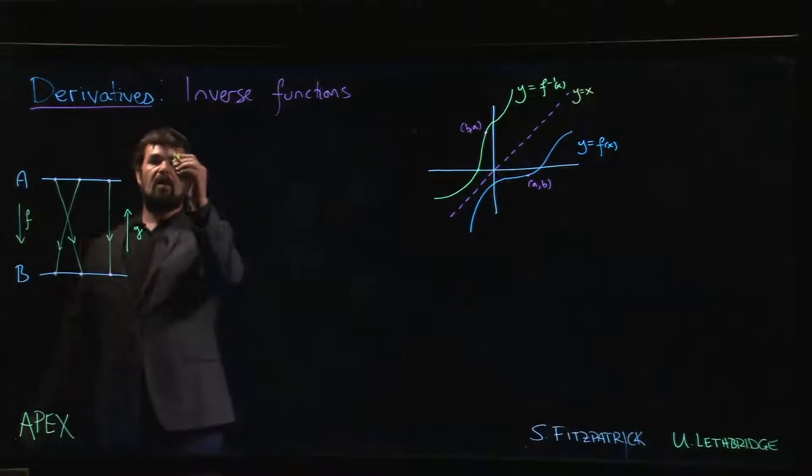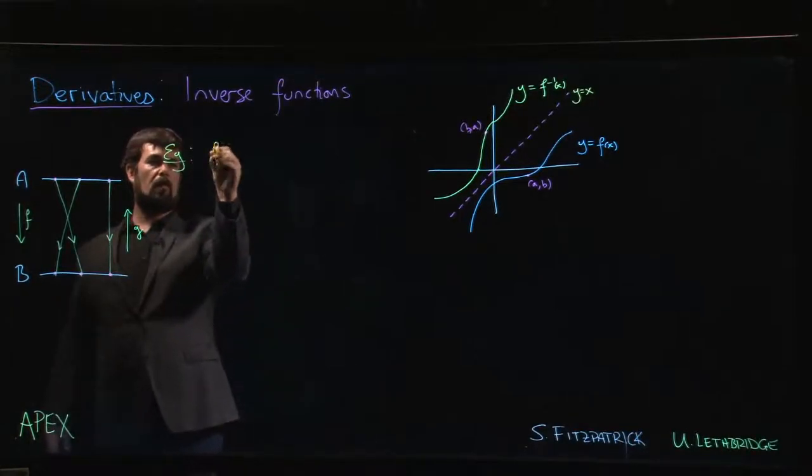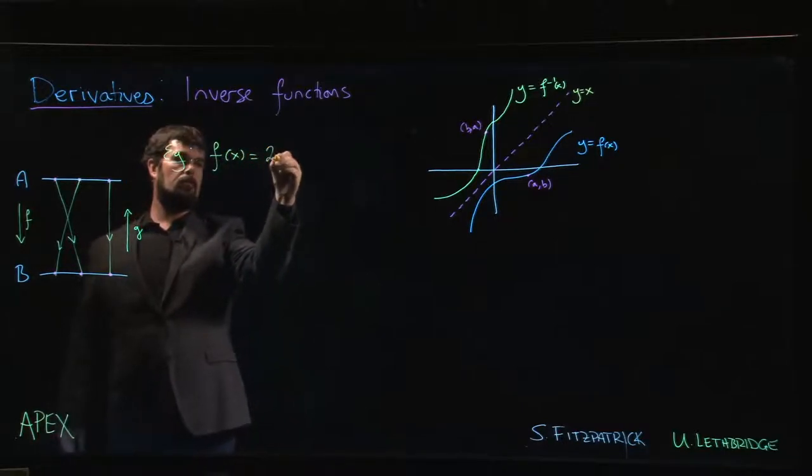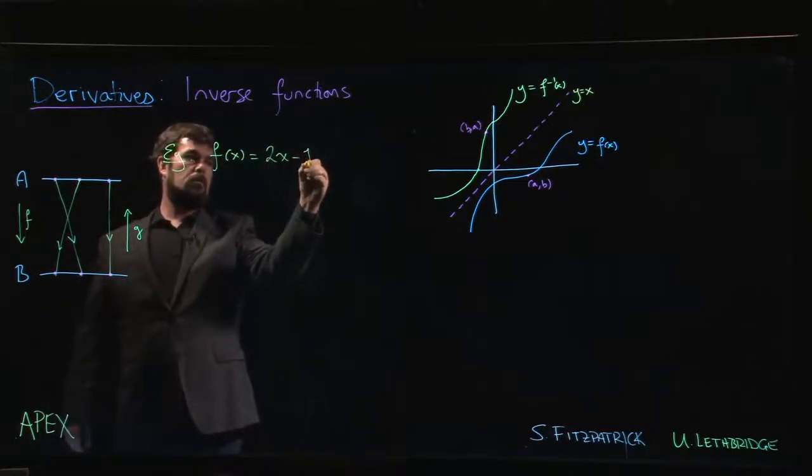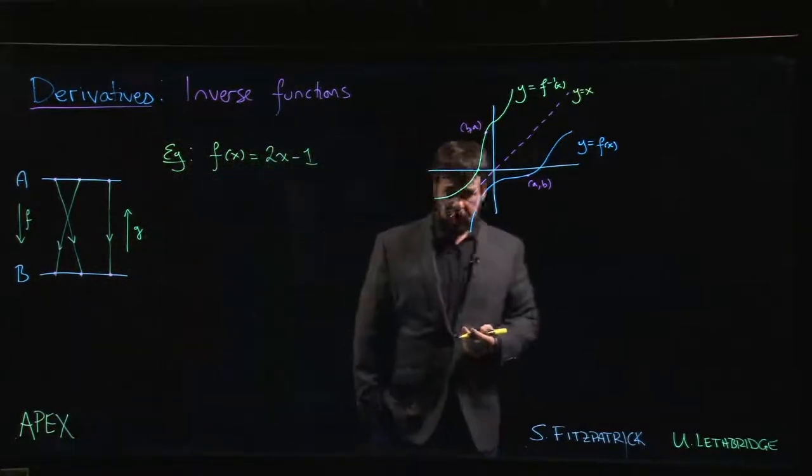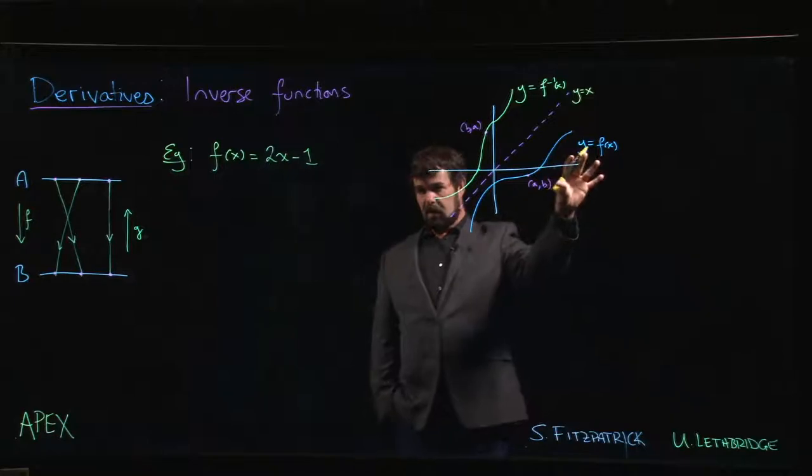Alright, so let's look at some basic examples. We'll start with this function 2x minus 1. It's a linear function, so graphically, the graph of a straight line is going to pass this horizontal line test.